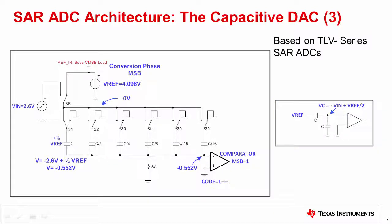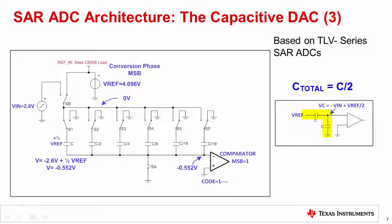The conversion process is performed by charge redistribution. The conversion sequence starts with the most significant bit, or MSB, decision. During this step, switch S1 connects the largest capacitor C to the reference voltage Vref. Capacitor C forms a 1:1 capacitance divider with the rest of the binary weighted capacitors. The simplified circuit on the right shows the comparator voltage becomes VC = -VIN + Vref/2, or VC = -0.552 volts. Since the voltage at the inverting comparator input is negative, the comparator output goes high, providing the MSB decision equal to 1. Note the reference input sees an effective switched capacitance load of C/2 when the MSB decision is made, causing a rapid transient current spike.